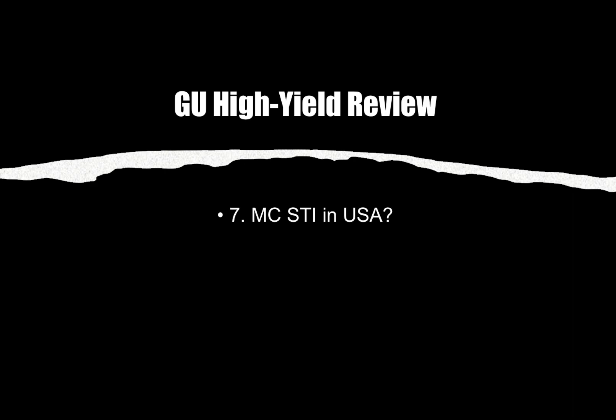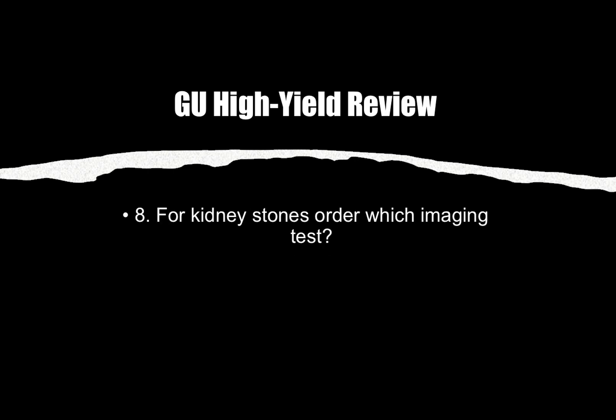Number seven: What is the most common STI in the United States? That would be chlamydia. Number eight: For kidney stones, which imaging test do you order? They'll give you a patient with flank pain wrapping around to the groin and maybe blood in the urine — you figure out it's a kidney stone and they'll ask the next best study. The answer is CT without contrast, because contrast can obscure the stone.